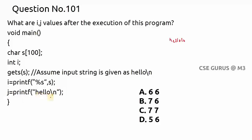The count includes the number of symbols inside the double quotes, including spaces, escape sequences, special characters — everything. When you assign a printf statement to a variable, it counts all those symbols inside the double quotes and assigns that count to the variable. So for j equals printf("hello\n"):